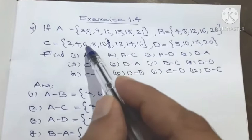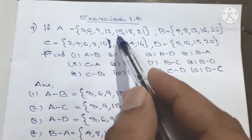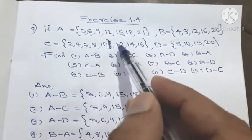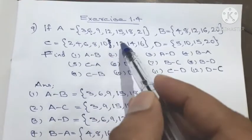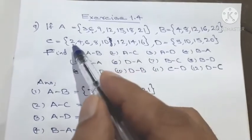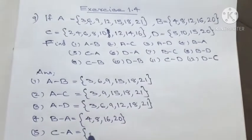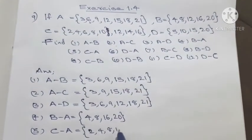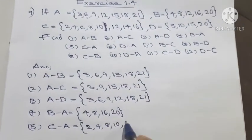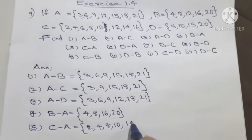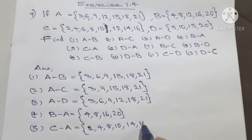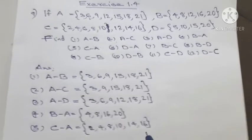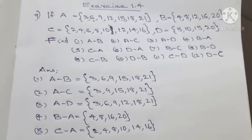Now listing the elements: 2, 4, 8, 10, 14, 16. This is the result for one of the set differences.